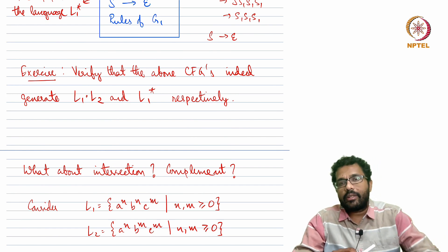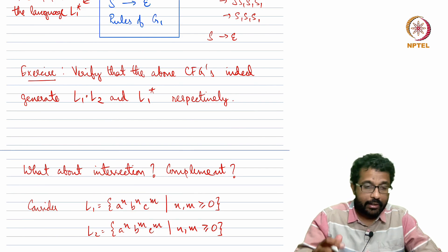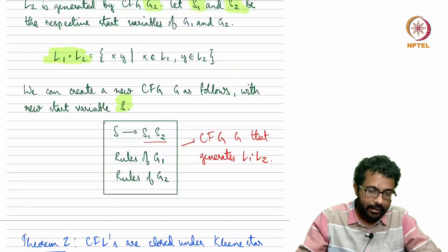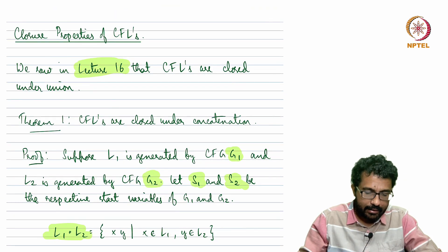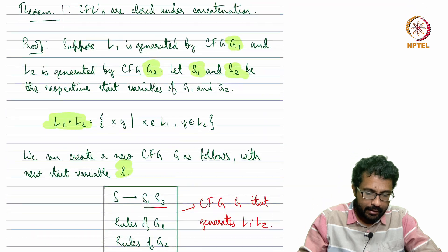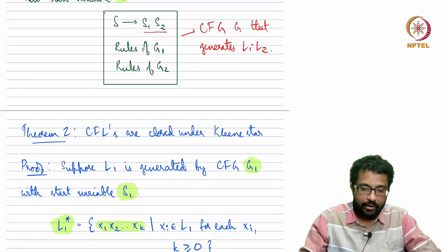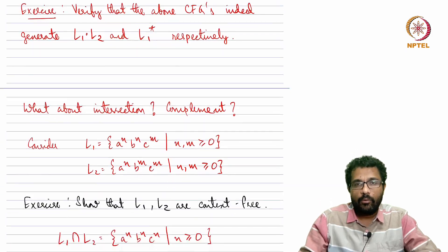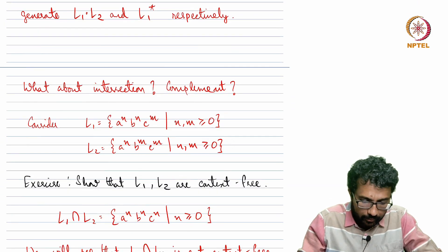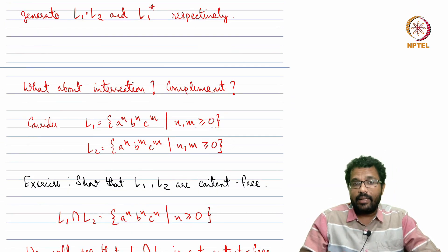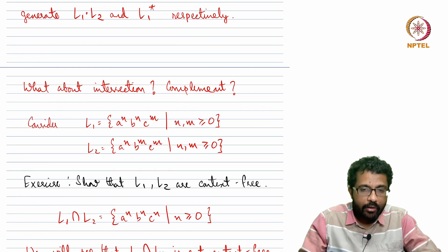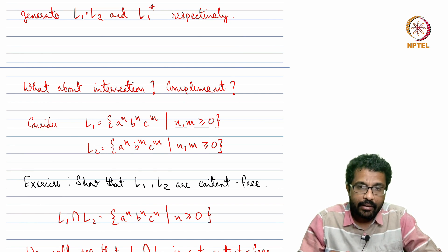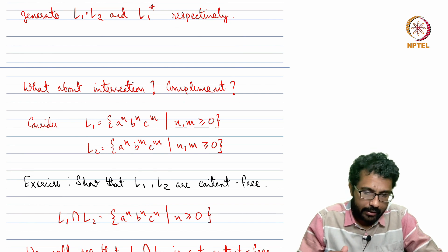What about context-free languages? We already saw union in lecture 16, and now we are seeing concatenation and Kleene star. What about intersection and complement? The answer is that context-free languages are not closed under intersection and also not closed under complement. Let us see why that is the case.